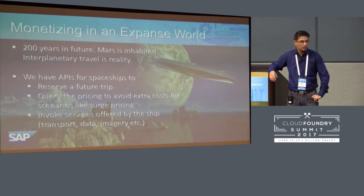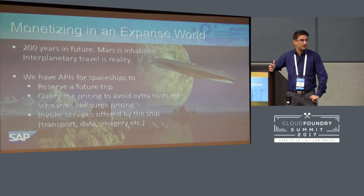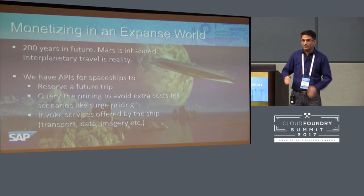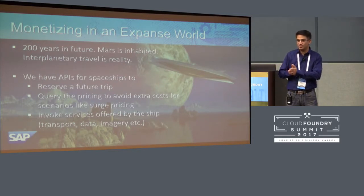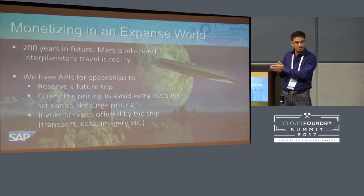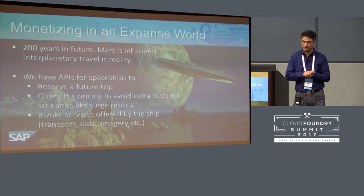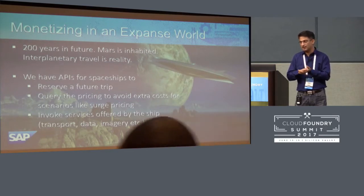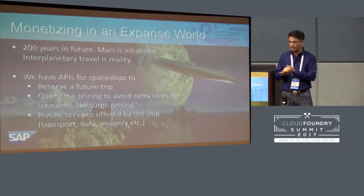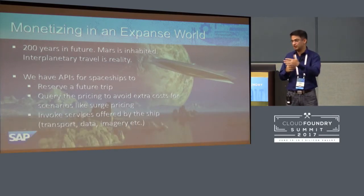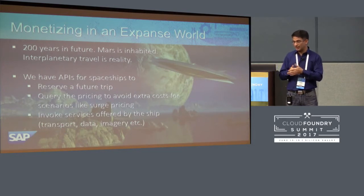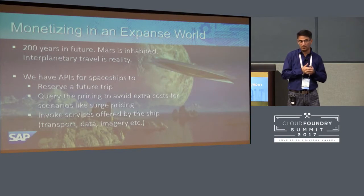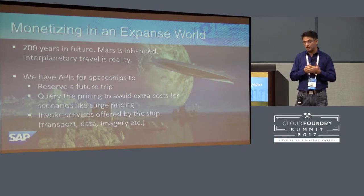Or I want to get pricing — maybe there's surge pricing involved where if I stop at an asteroid in the middle, the pricing is different. There's another API we want to monetize. And then there are spaceship APIs, like GetImagery, that the spaceship is using. Those are the APIs we will monetize, and that's the background we'll be working on.